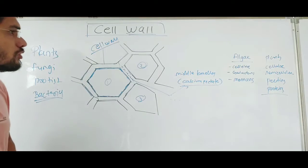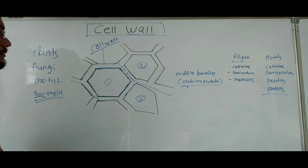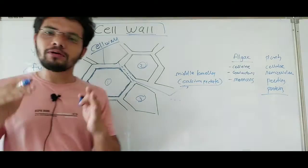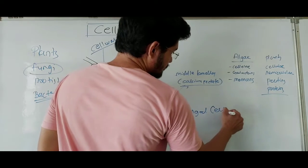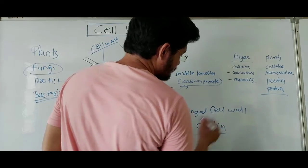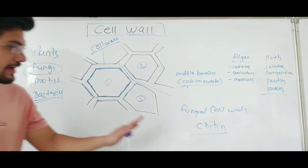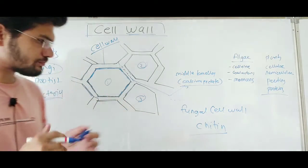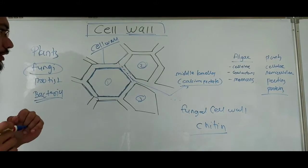Cellulose is a polysaccharide made up of glucose. Fungal cell walls are also made up of a polysaccharide — chitin. Chitin is made up of sugar monomers and is another type of polysaccharide found in fungal cell walls.